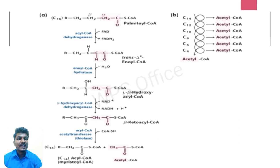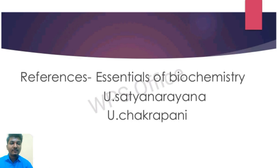Here is the pathway of beta oxidation of fatty acids. Palmitoyl coenzyme A is converted into trans-enoyl coenzyme A in the presence of enzyme acyl coenzyme A dehydrogenase, where cofactor FAD is converted into FADH2. Trans-enoyl coenzyme A is converted into beta-hydroxyacyl coenzyme A in the presence of enoyl coenzyme A hydratase, where the cofactor is H2O. Beta-hydroxyacyl coenzyme A is converted into beta-ketoacyl coenzyme A in the presence of beta-hydroxyacyl coenzyme A dehydrogenase, where cofactor NAD+ is converted into NADH + H+. Beta-ketoacyl coenzyme A is then converted into acetyl coenzyme A in the presence of enzyme acetyl coenzyme A acetyltransferase, or thiolase.